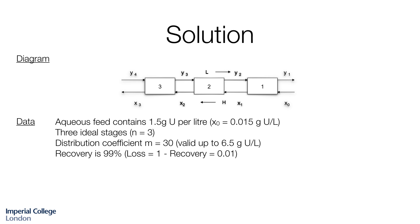The data we have from the problem statement: the aqueous feed contains 1.5 grams of uranium per litre, there are three ideal stages so n equals 3, our distribution coefficient has a value of 30, and our recovery is 99%. We know that loss is defined as 1 minus the recovery, so our loss is 1%.